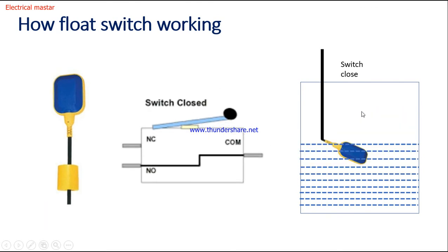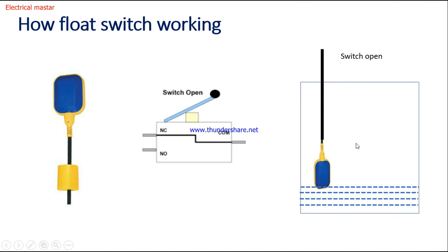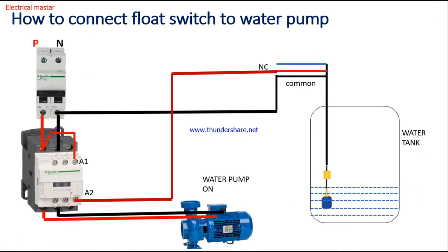Now we will see how to connect the float switch to the water pump to control automatic operations. This is the water tank and here is the water pump. We are giving the power supply to the water pump through a two-pole MCB. Since it is a single-phase water pump, phase and neutral will come in and connect through the magnetic contactor at power terminals 1 and 2.